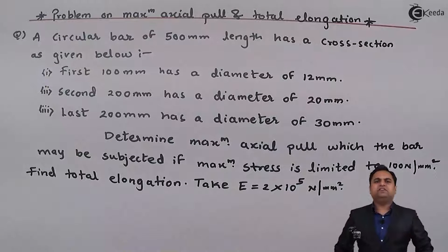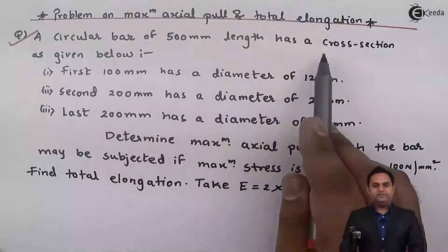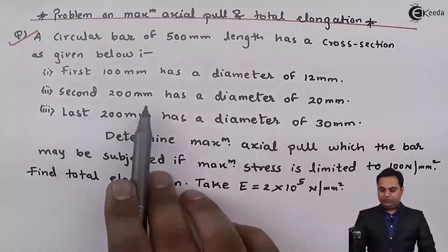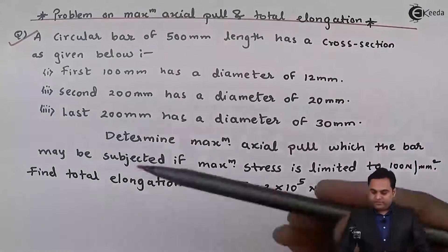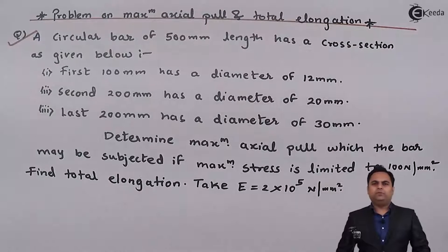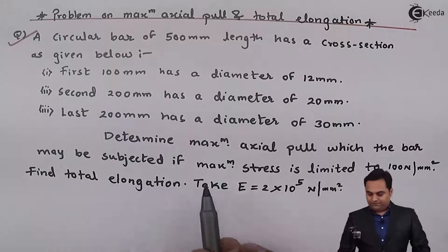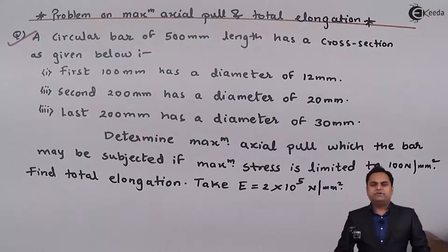Hello friends, in this video we will see a problem on maximum axial pull and total elongation. A circular bar of 500 mm length has a cross section as given: the first 100 mm length has a diameter of 12 mm, the second 200 mm length has a diameter of 20 mm, and the last 200 mm has a diameter of 30 mm. The maximum stress is limited to 100 N/mm² and E = 2 × 10⁵ N/mm².